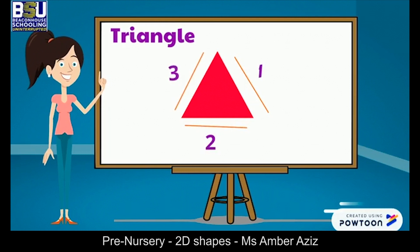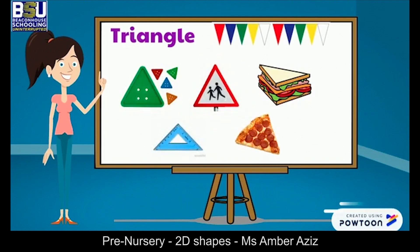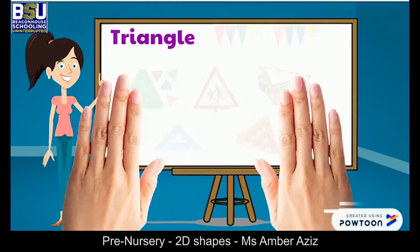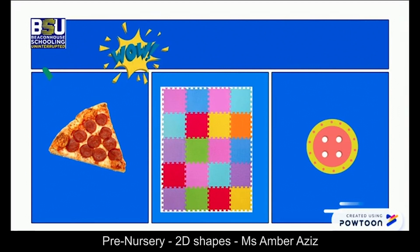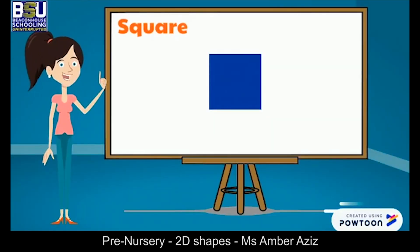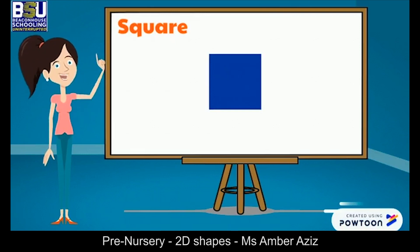two, three. Awesome! Now let's look at the things that are triangle in shape. Look at all these things — can you spot the triangle? Yes, a pizza slice is a triangle. Good job!